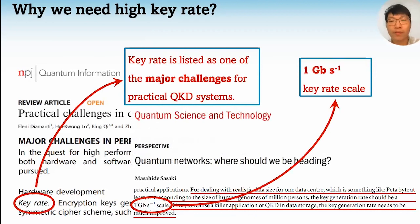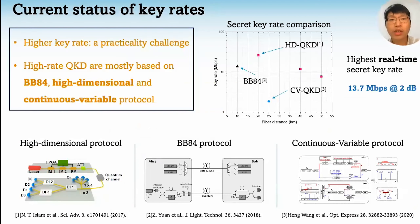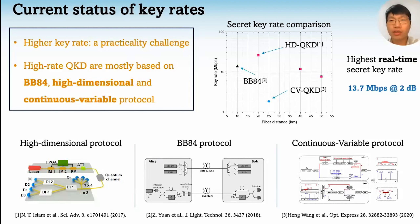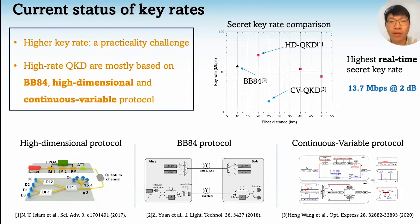Unfortunately, we are still not very close to this goal. To achieve a higher key rate in QKD, mostly three protocols are adopted: BB84, high-dimensional, and continuous variable protocols. Their state-of-the-art key rates can be represented by these three works. Currently, the highest real-time secret key rate is 13.7 Mbps over a 2 dB channel, which is two orders of magnitude lower than the goal of 1 Gbps. Therefore, we have a long road to the goal, and we aim to study how to push the key rate of QKD further.